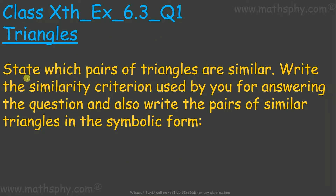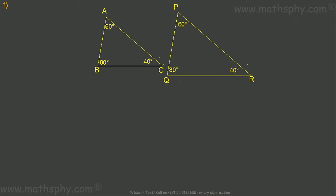This question says: state which pairs of triangles are similar, write the similarity criteria used, and write the pairs of similar triangles in symbolic form. In this question we have six pairs of triangles and we have to see which pair is similar, which criteria we are using, and write it in symbolic form.